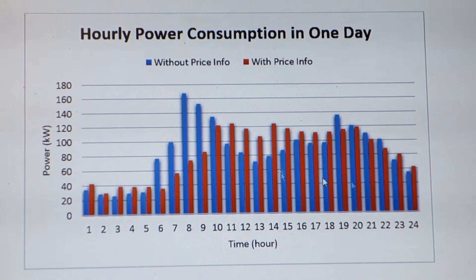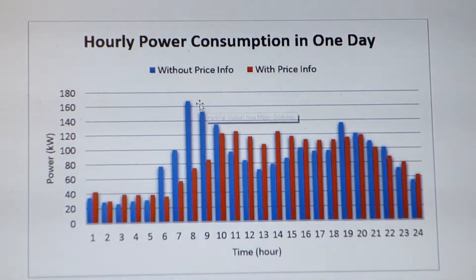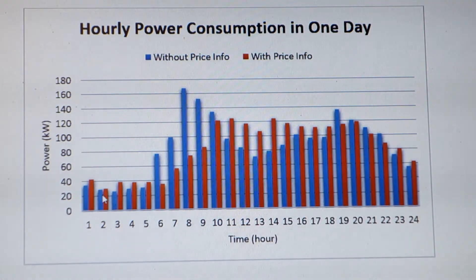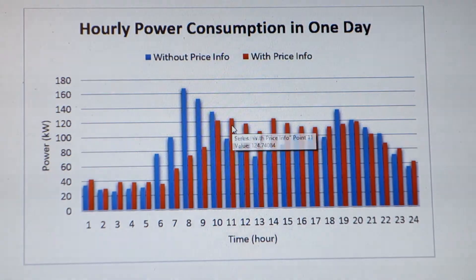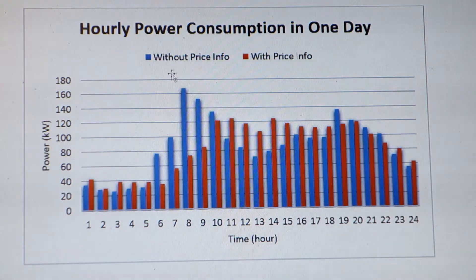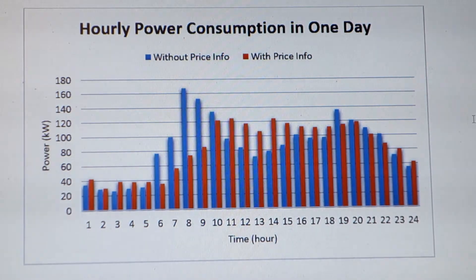The peak power consumption is higher without pricing. With pricing information, the peak power is smaller. Of course, the total power consumption is the same for each user — this just illustrates the difference between without and with pricing information.